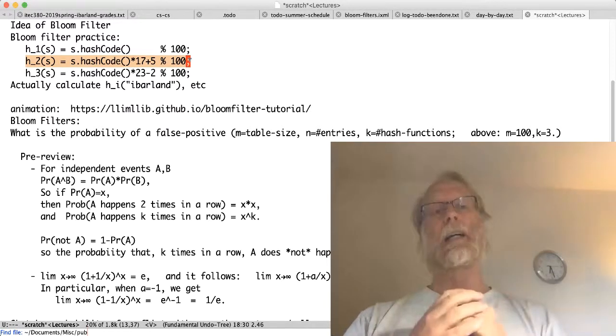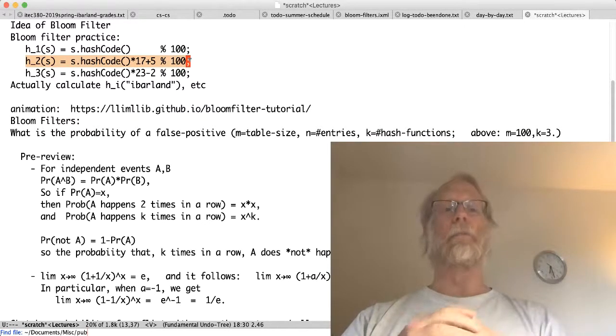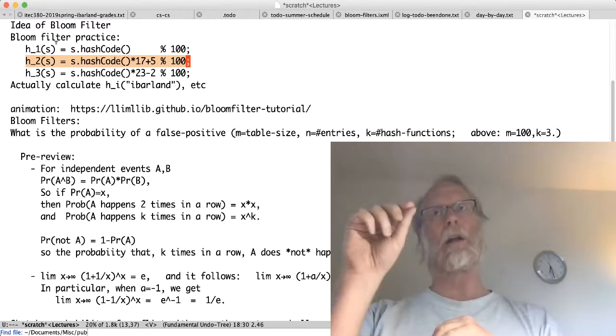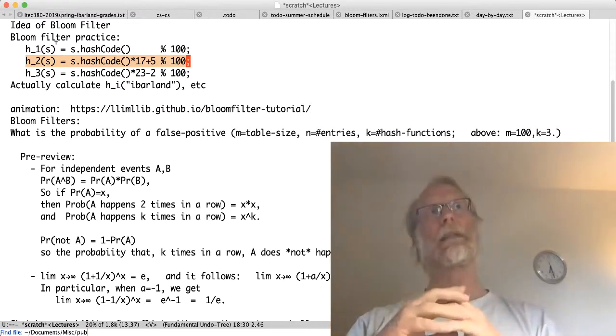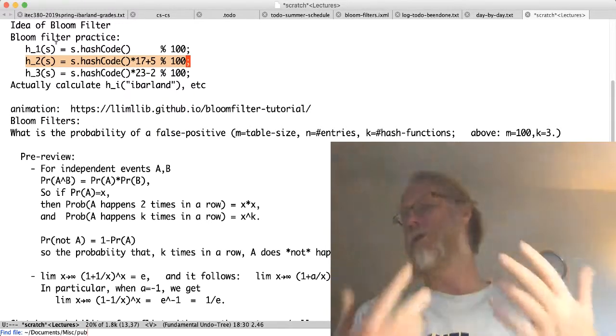Later you come by and say, is ibarl in the table, and I'll look up h1 of ibarlind and look there in the table, h2 of ibarlind, h3 of ibarlind. I'll look at those indices, they're all set, I'll say ibarlind was in the set. Maybe it was, maybe that's a true positive result.